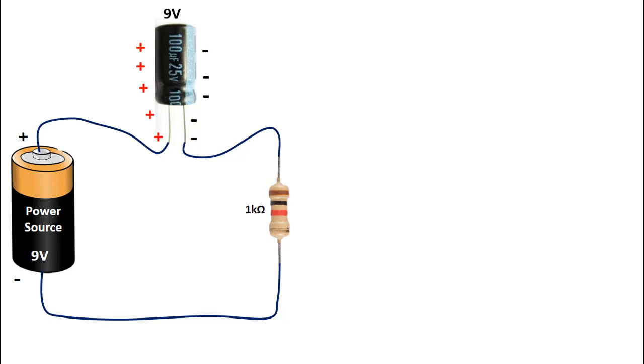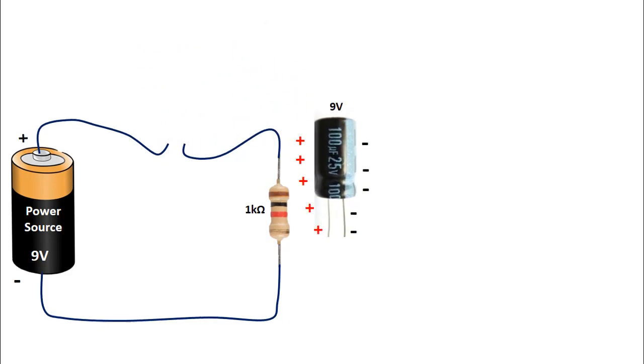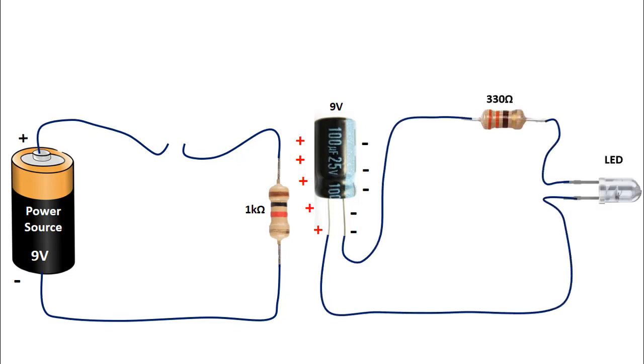After the capacitor is stored, when we deactivate and connect it to the circuit with the resistor and LED on the right, the LED will light up. After the capacitor is discharged, the LED will turn off.